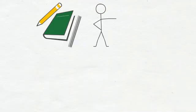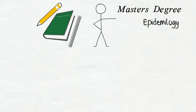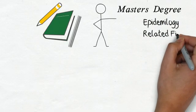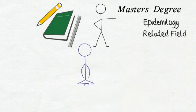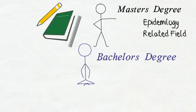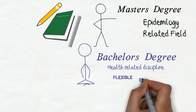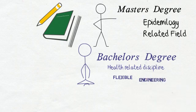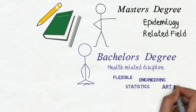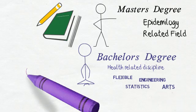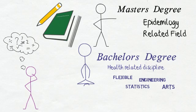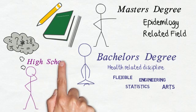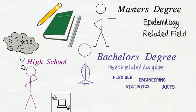To become an epidemiologist, you need at least a master's degree from an accredited institution. Most epidemiologists have a master's degree in epidemiology or a related field such as public health. In order to qualify for a master's degree, many institutes ask for a bachelor's degree in a health-related discipline. However, some institutes are more flexible and also allow students with bachelor's degrees in other disciplines such as engineering, statistics and arts. A math, science and computers background in high school is also recommended.